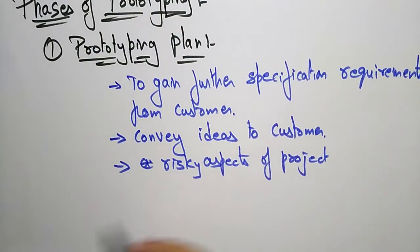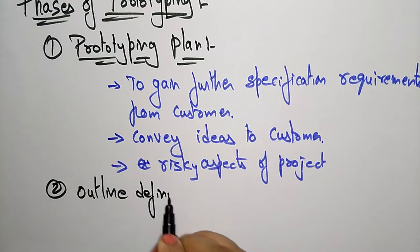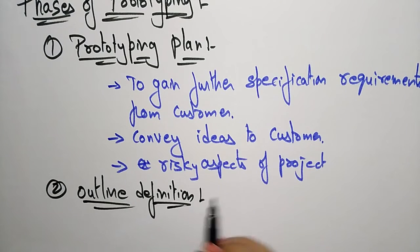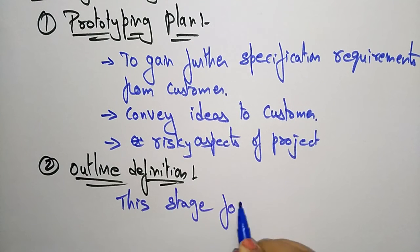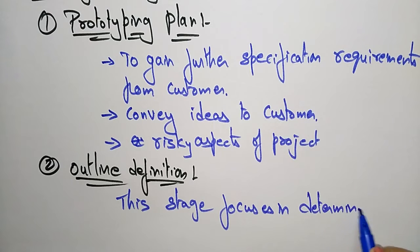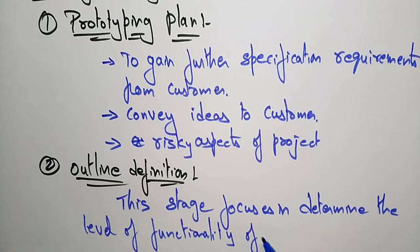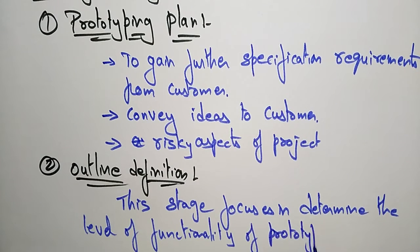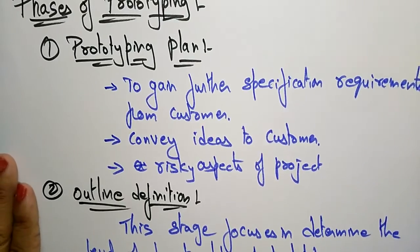The second phase is outline definition. This stage focuses on determining the level of functionality of the prototype and documenting the decisions made.